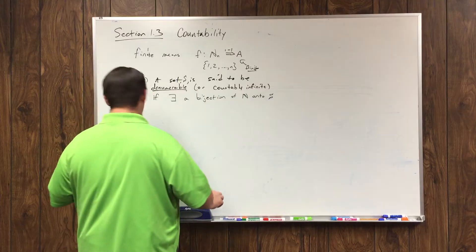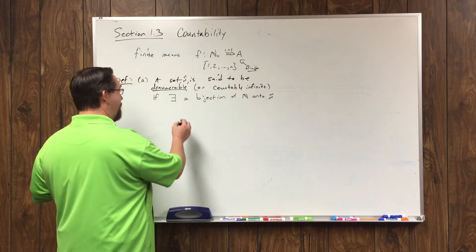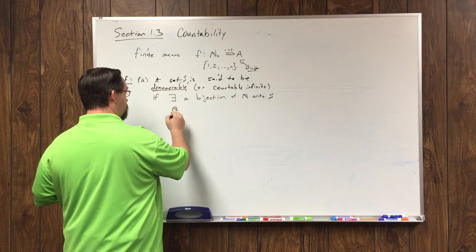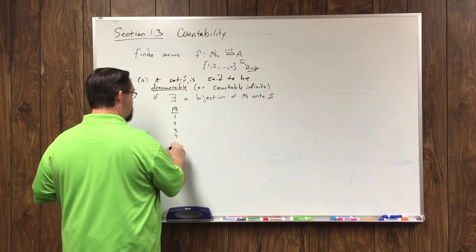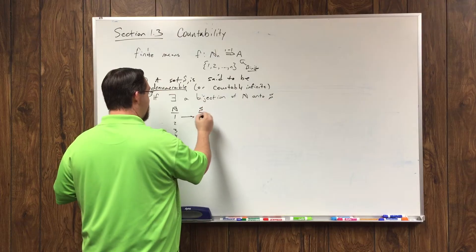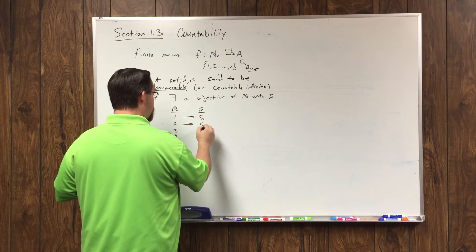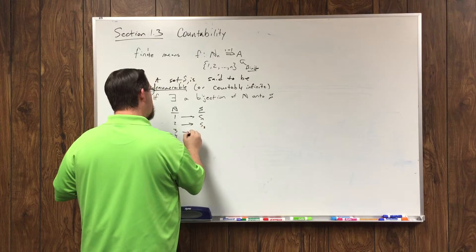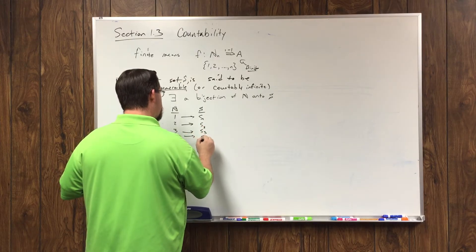So, essentially what we're saying is we can take and map the natural numbers, which you'll know are 1, 2, 3, 4, and so on without end, and be able to map that to some element of S. Now, normally we call it S sub 1, S sub 2, S sub 3, S sub 4.